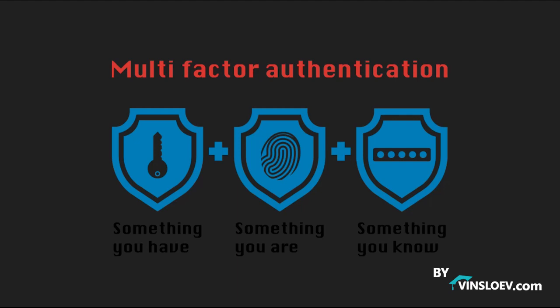Something you have is, for example, an ID card or a physical token that you need to present to get access to something. Something you are is, for example, fingerprints, an eye scanner, or something that is uniquely tied to you as a person. And then we have something you know, which is our usernames and passwords.